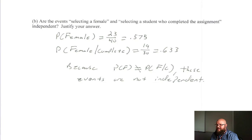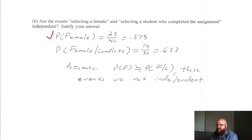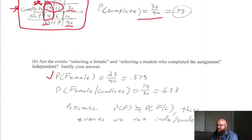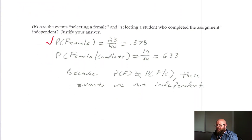They needed to show the calculation for that, and they did. They showed the probability of being female as 23 over 40, and then the probability of female given they were complete as 19 over 30. Because these two probabilities were not equal to each other, this showed they were not independent. Therefore they get an E for this one as well — so far, so good.